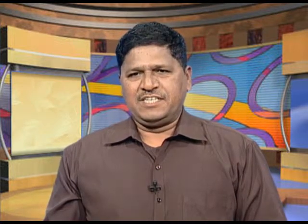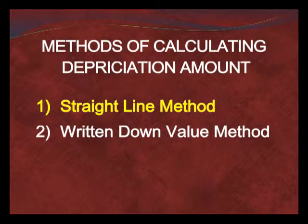There are commonly two methods of calculating the amount of depreciation: number one is the straight line method, and number two is the written down value method. Under the straight line method, it is assumed that the usage of the asset will be the same over the years, and therefore a constant amount is charged every year.